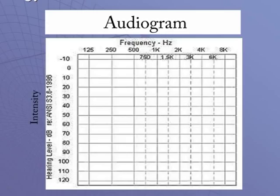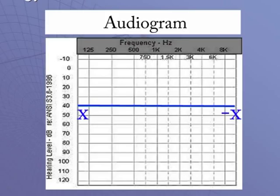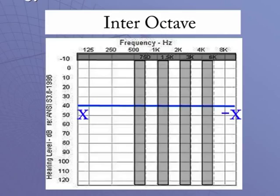X-axis me minus 10 se leke 120 tak numbers hain. Yahan par dB ka matlab unit hai jo ke intensity ko represent karta hai. Y-axis audiogram me intensity ko represent karta hai. X-axis me 125 se leke 8000 Hertz tak ke number hain — 125, 250, 500, 1k, 2k, 4k, aur 8k — ye octaves hain. 500 aur 1000 ke darmiyan ka number 750 hai, jo interoctave hai. 1.5, 3, aur 6 bhi interoctaves hain. Interoctaves us waqt check karte hain jab octaves ke darmiyan ka farq 20 dB se zyada ho.